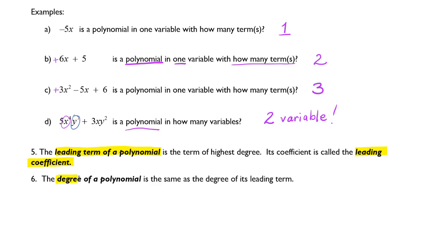The degree of a polynomial is the same as the degree of its leading term. So you have to remember that with leading terms, you would put the highest degree first, and then the degree of that polynomial will be the degree of the leading term.